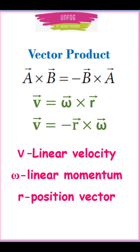But linear velocity is not R cross omega. It is equal to omega cross R.